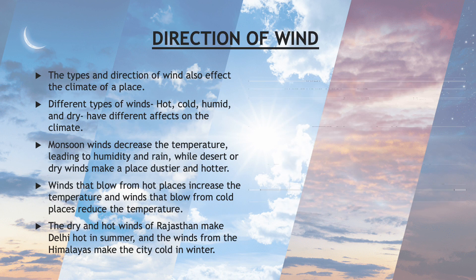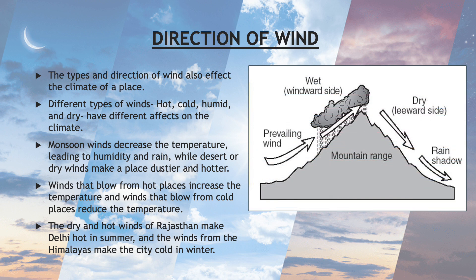Direction of Wind: the types and direction of wind also affect the climate of a place. Different types of winds — hot, cold, humid and dry — have different effects on the climate. Monsoon winds decrease the temperature, leading to humidity and rain, while desert or dry winds make a place dustier and hotter.